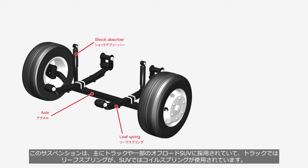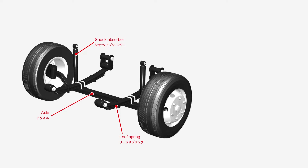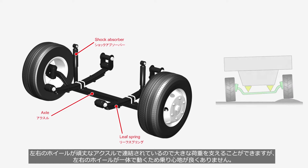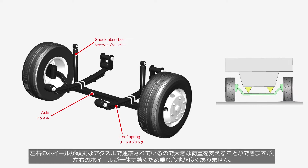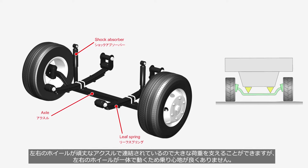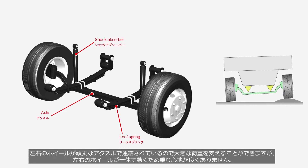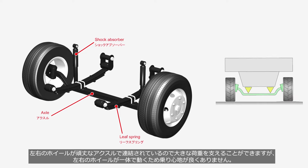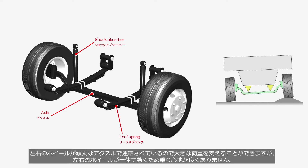In trucks, leaf springs are used, while SUVs utilize coil springs. The sturdy axle connects the left and right wheels, allowing them to bear significant loads. However, since the left and right wheels move together as a single unit, the ride comfort is compromised.